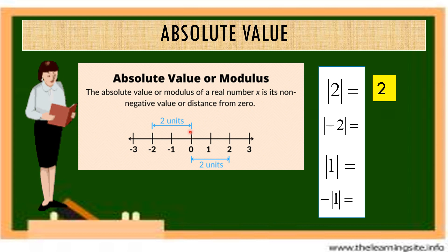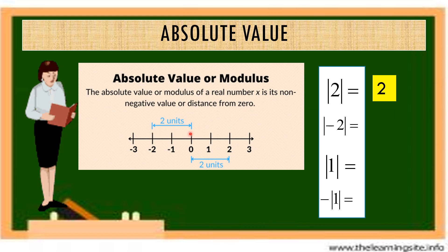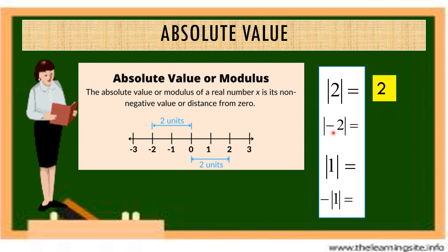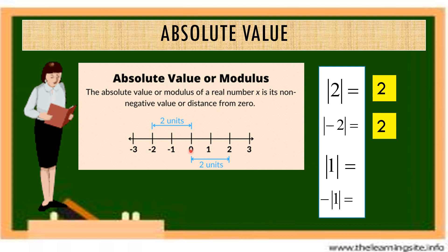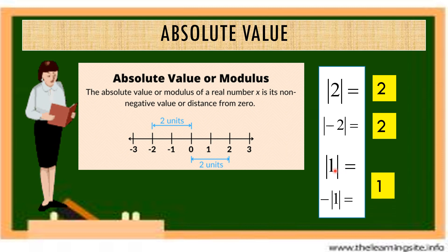Next, we need to find the distance from 0 to negative 2. That is the absolute value of negative 2. The absolute value of negative 2 is still 2, disregarding the sign. The distance from 0 to 1 is the absolute value of 1, and the absolute value of 1 is 1.